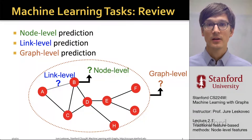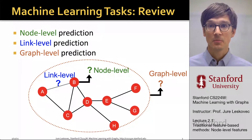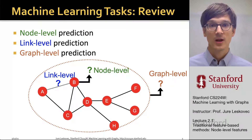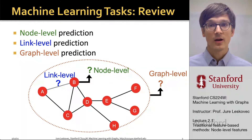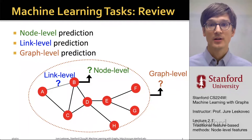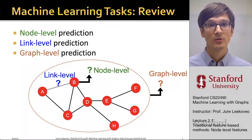In particular, we can think about the node-level prediction tasks, we can think about the link-level or edge-level prediction tasks that consider pairs of nodes and try to predict whether the pair is connected or not. And we can think about the graph-level prediction, where we want to make a prediction for an entire graph — for example, for an entire molecule or for an entire piece of code.